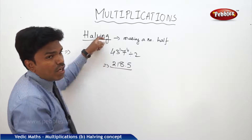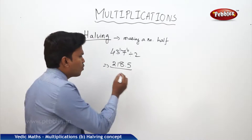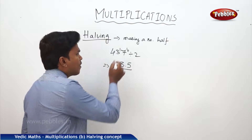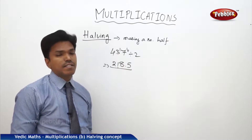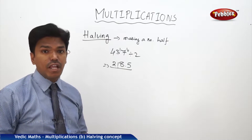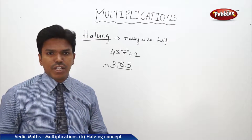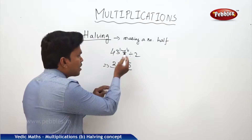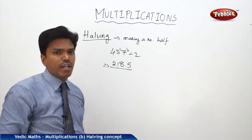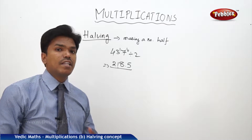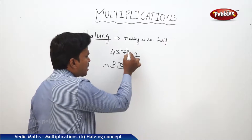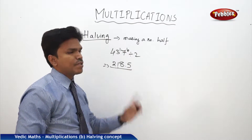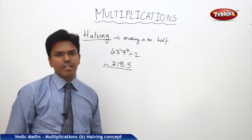Let me explain clearly. If you divide 4, how many times does 2 go? Two times, no remainder. Then divide 3: 2 goes one time, remainder 1. Put that 1 before the next digit to make 17. 2 goes into 17 eight times, remainder 1. Put the remainder before the last digit to get 10. 2 goes into 10 five times. So the answer is 218.5.